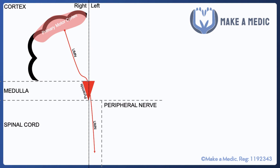The upper motor neurons originate in the primary motor cortex and travel downwards towards the pyramids within the medulla. They are called the pyramids because they are essentially a convergence of various upper motor neurons forming this upside down pyramid type shape.